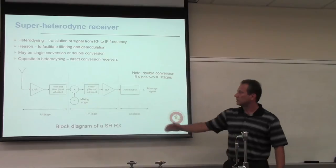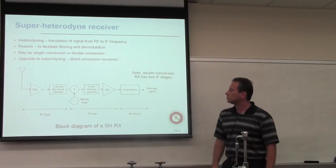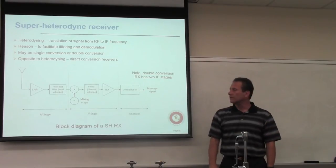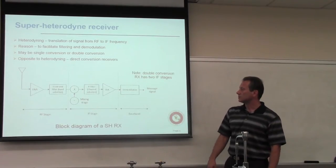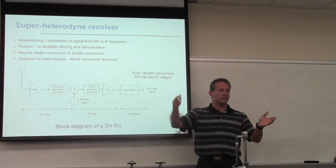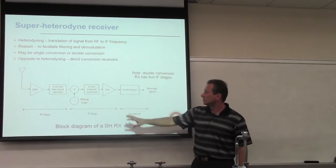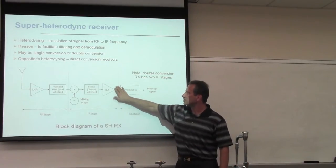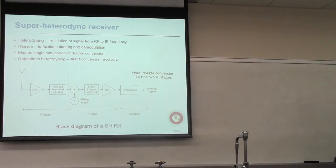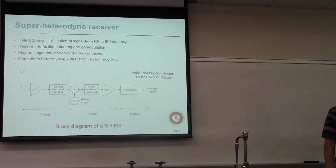After the channel selection filter, you have the IF amplifier, which provides most of the gain. Usually it's a variable gain amplifier — if the signal is weak, gain increases; if strong, gain decreases — so the dynamic range of the signal is controlled for whatever comes to the demodulator. The opposite of superheterodyne is direct conversion reception, where you bring the signal all the way to baseband in one step, so the mixing frequency equals the carrier frequency.